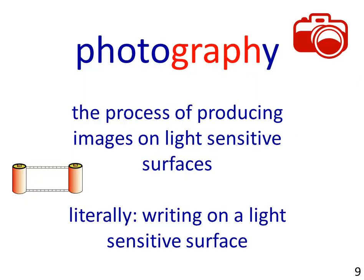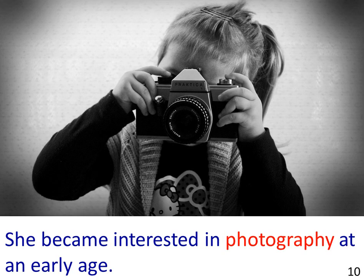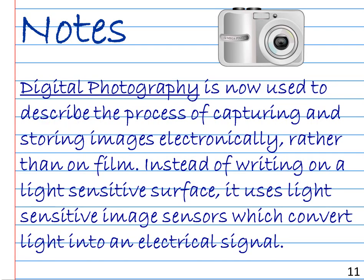Next is the word photography: the process of producing images on light-sensitive surfaces. Literally, writing on a light-sensitive surface. The picture shows a little girl taking a photograph with a Praktika camera. The sentence example reads: She became interested in photography at an early age. Digital photography is now used to describe the process of capturing and storing images electronically, rather than on film. Instead of writing on a light-sensitive surface, it uses light-sensitive image sensors, which convert light into an electrical signal.